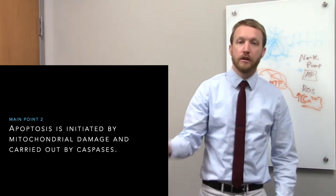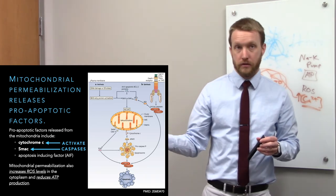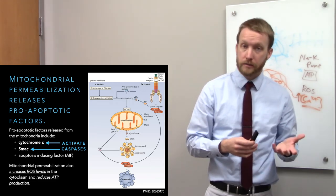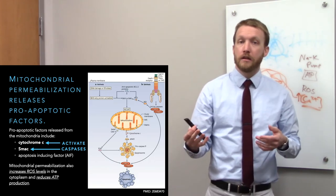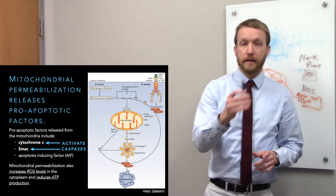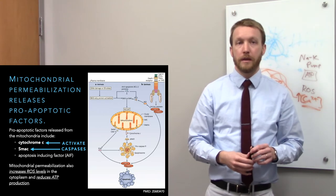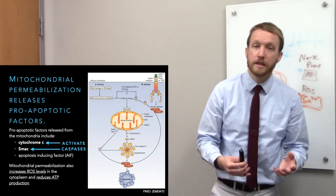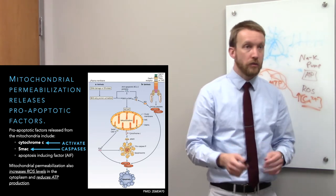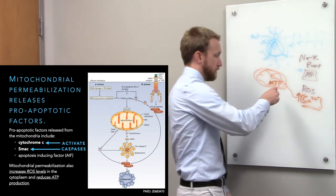Caspases are the effectors of apoptosis. When we have permeabilization of the mitochondria, pro-apoptotic factors are going to leak out. These could be cytochrome c — a component of the electron transport chain — if you have electron transport chain components leaking out, that cell is not going to be successful for very long, so the best approach is to get rid of it. SMAC is another pro-apoptotic factor that leaks out, and there's apoptosis-inducing factor as well. The permeabilization of mitochondria can occur because of reactive oxygen species or calcium buildup, and once we have that permeabilization, we get leakage of those toxic pro-apoptotic factors.